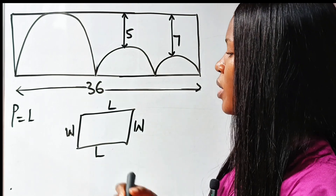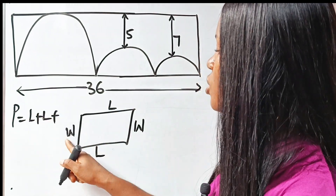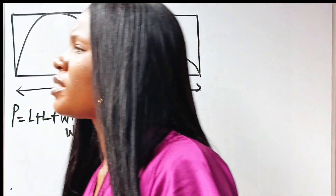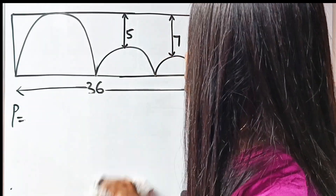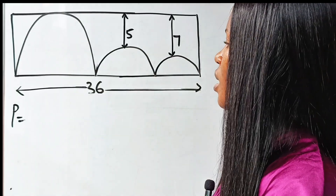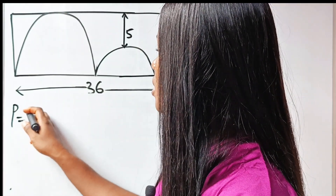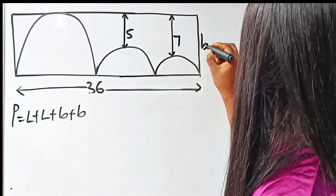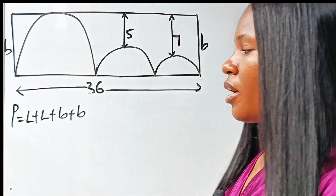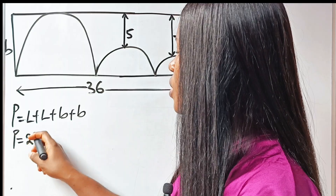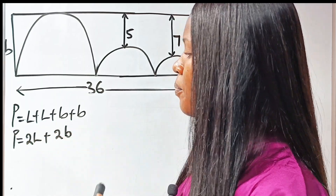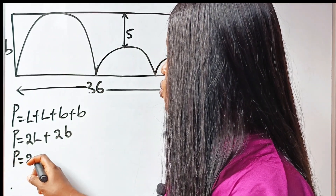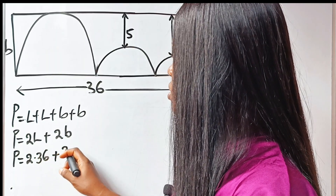The perimeter then should be L plus L plus W plus W. In this case, we are given one side of this rectangle and asked to find the perimeter. We already know the length to be 36. So: length plus length plus breadth plus breadth, which gives us 2L plus 2B. We are given the length as 36, so the perimeter is 2 multiplied by 36 plus 2B.